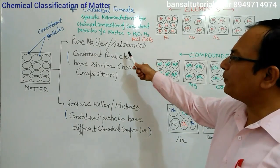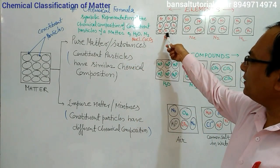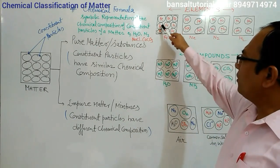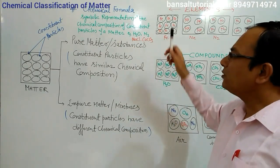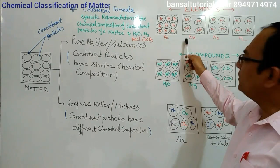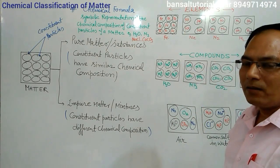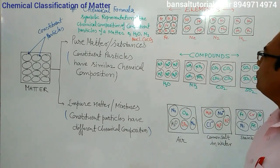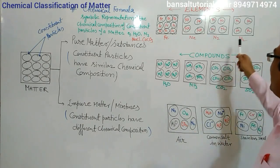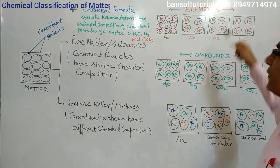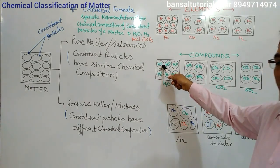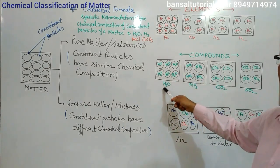You can see the examples of pure matter. For example, iron — each constituent particle is composed of the same type of atom, that is Fe. All particles are the same kind, so iron is pure matter. In the same way, neon gas — each particle of neon gas is constituted by neon atoms. In the case of nitrogen gas, each constituent particle is composed of two atoms of nitrogen. That is again pure matter. Hydrogen gas — each particle is composed of two atoms of hydrogen.